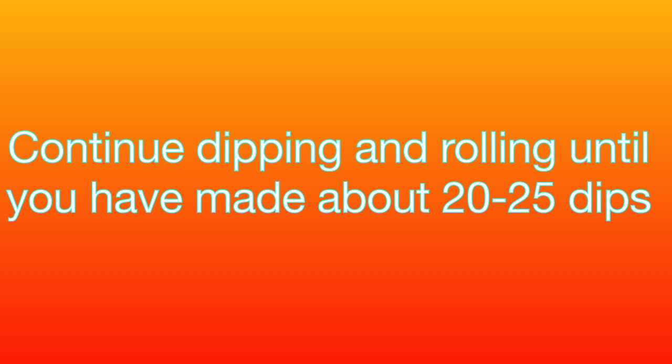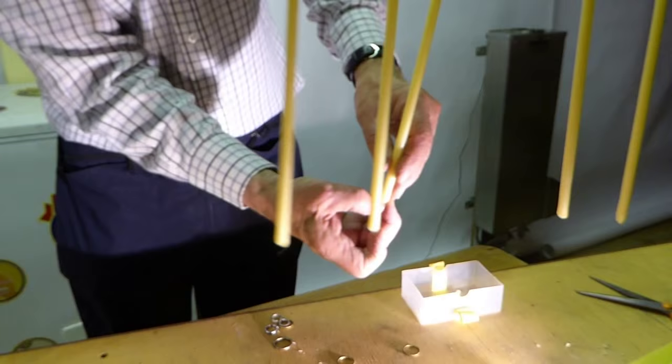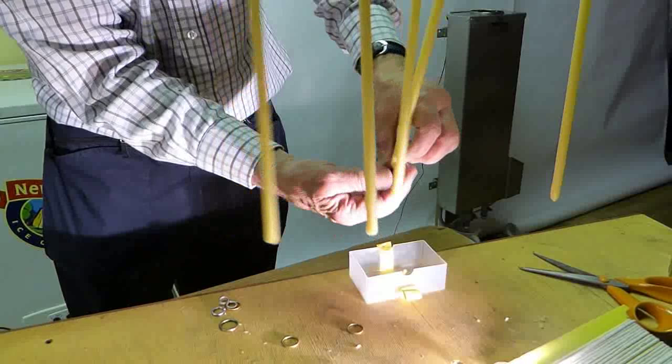Continue dipping. You'll find as the candle gets bigger that you may need to top up the wax almost every time you've made a dip. Make sure you keep the same rhythmical movements and that you remove the drip from the bottom of the candle. Continue for about 20 to 25 dips or until the candle is almost the size you would really like it to be.